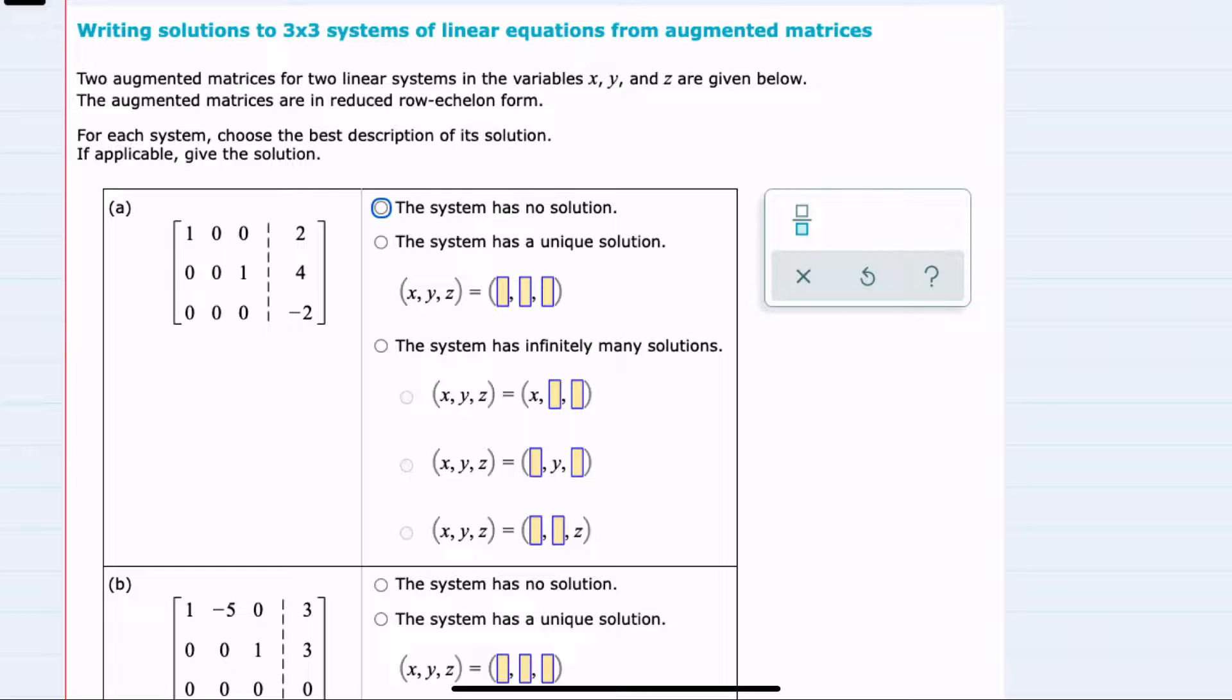We're given here two augmented matrices, A and B, and told that each is for the variables x, y, and z, and that the augmented matrix is already in its reduced row echelon form.